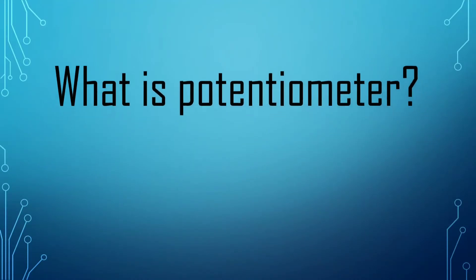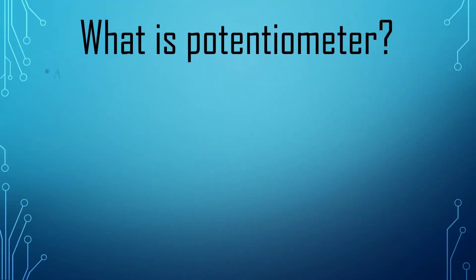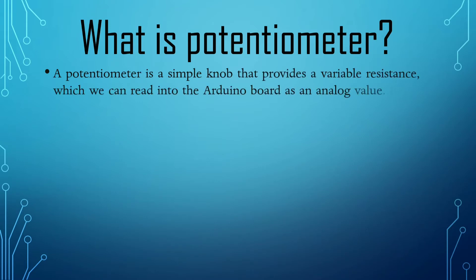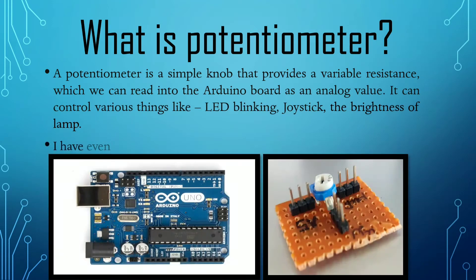So basically what is a potentiometer? A potentiometer is a simple knob that provides a variable resistance, which we can read into the Arduino board as an analog value. It can control joysticks and can also do various things like blinking of LEDs. I have even given the image of Arduino and potentiometer.